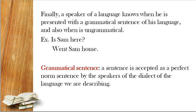Finally, a speaker of a language knows when he is presented with a grammatical sentence of his language and also when it is ungrammatical. شخص المتحدث بلغة معينة قادر على أن يميز بين الجملة الصحيحة نحوياً والجملة الخاطئة. مثال: 'Is Sam here?' — جملة صحيحة. 'When Sam home?' — جملة خاطئة. A grammatical sentence is a sentence accepted as a perfect norm sentence by the speakers of the dialect of the language we are describing. وشكراً على الاستماع. And thank you for your listening.